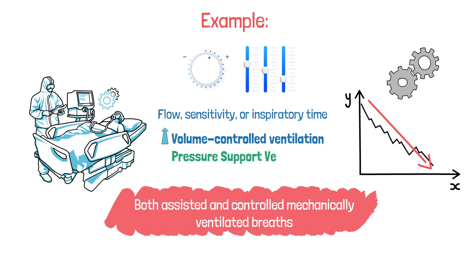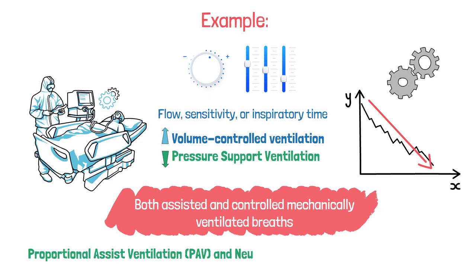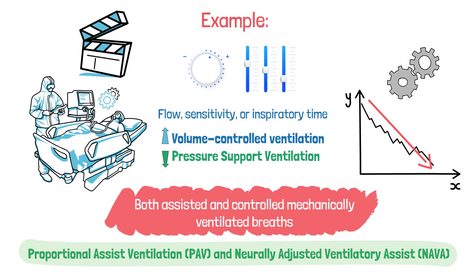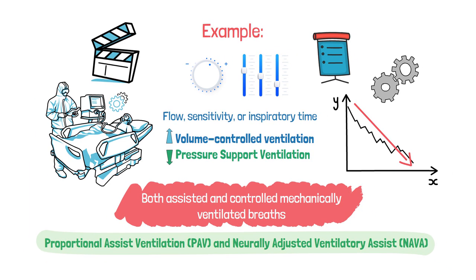Modes such as pressure support ventilation typically result in the least amount of dyssynchrony cases. Proportional assist ventilation and neurally adjusted ventilatory assist are two ventilator modes that are effective in avoiding dyssynchrony, because they allow the patient to select the ventilatory pattern that is delivered.